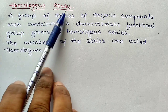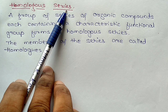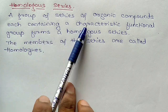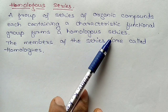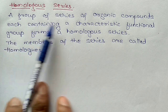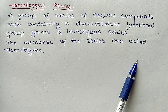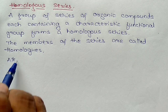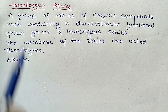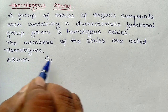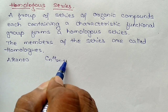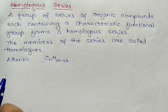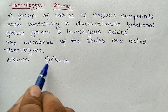Now we will discuss homologous series. In high school also you have studied homologous series. A group or series of organic compounds, each containing a characteristic functional group, forms a homologous series. These are series of organic compounds represented by a general formula. For example, alkanes have the general formula CnH2n+2, where n is the number of carbon atoms.